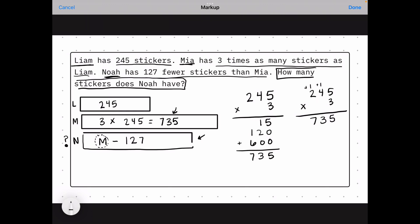But my question wasn't how many stickers does Mia have? It's how many does Noah have? Now I can plug in that I know Mia has 735. So now I just got to do this last step of doing 735 minus 127. With some borrowing, I find out that Noah has 608 stickers.